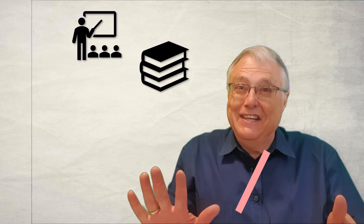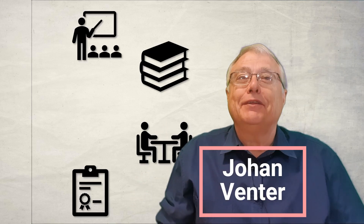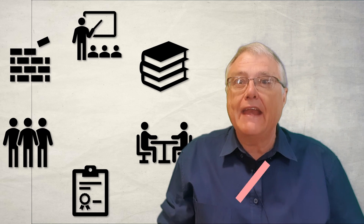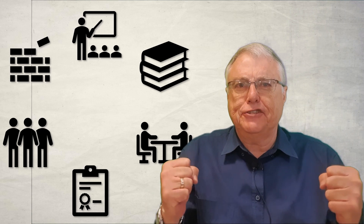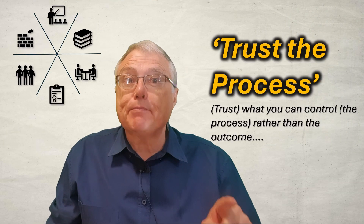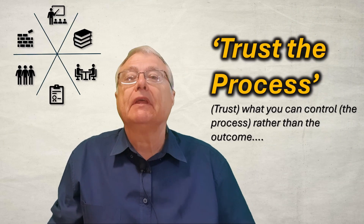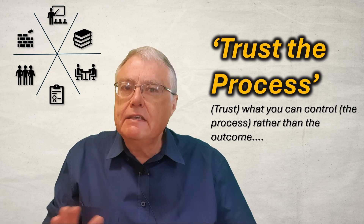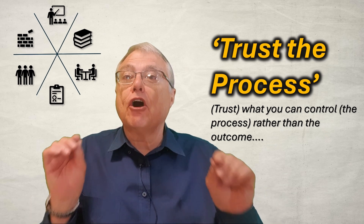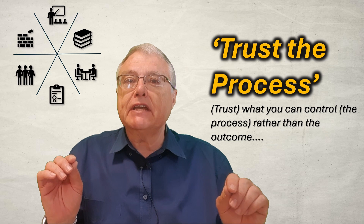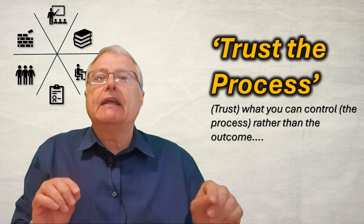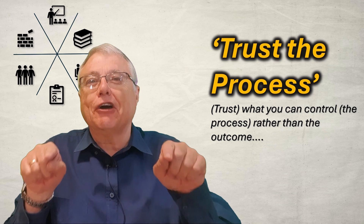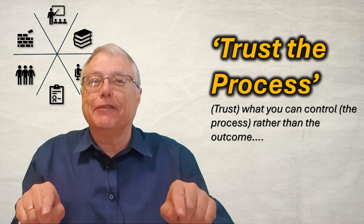We know that six things need to happen to effectively teach and learn something and have engaged students. Trust the process. The six things must happen in more or less equal quantities, regardless of the subject or the learner. It's like a recipe — follow it and the results speak for themselves.